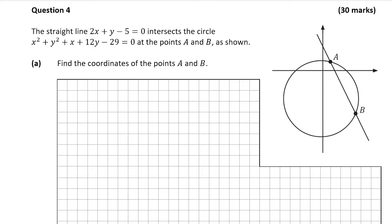Question 4 tells us that the straight line 2x plus y minus 5 equals 0 intersects the circle x squared plus y squared plus x plus 12y minus 29 equals 0 at the points A and B as shown. Question 4 part A, which is worth 10 marks, wants us to find the coordinates of the points A and B.